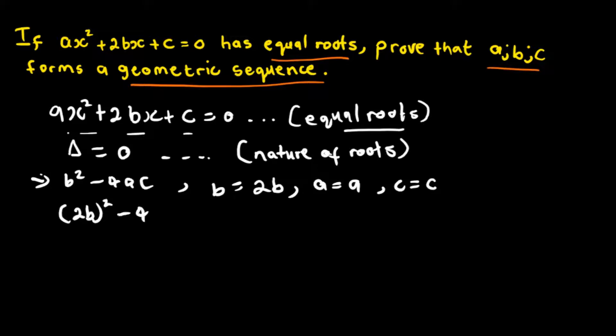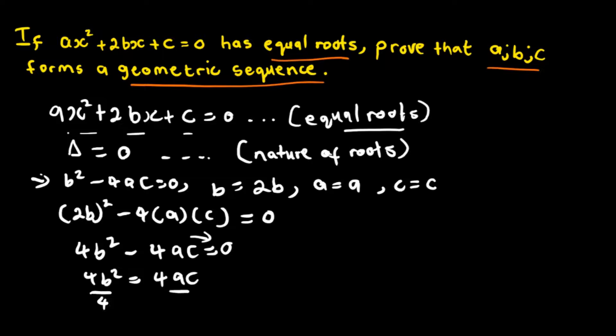Since the discriminant equals zero, we have 4b² - 4ac = 0. Rearranging: 4b² = 4ac. Dividing both sides by 4 gives b² = ac. This is our first equation.